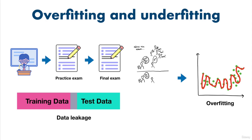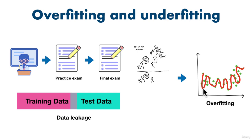Data leakage happens when some of your test data leaks into your training data. This often results in overfitting or a model doing better on the test set than on the training data set. It's like if you were to have a look at the final exam — your machine learning model has just learned what it's about to be tested on. So when it comes time to modeling, it's just learned it way too well and it starts to fit the data like this.